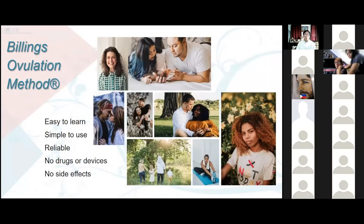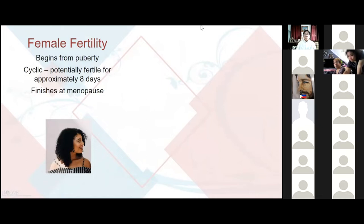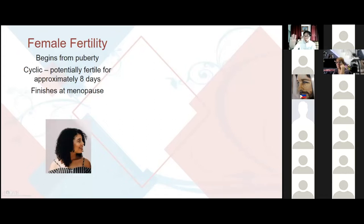These slides can be used in your Pre-Cana. Let's have a quick review of female and male fertility. Female fertility begins from puberty, is cyclic, and potentially fertile for approximately 8 days in a cycle. It ends at menopause. As a woman approaches the menopausal period, her fertile periods shorten — from approximately 8 days when young, decreasing to perhaps five, four, or three days.